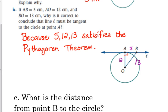What is the distance from point B to the circle? Using this figure right here that I've labeled 5, 12, and 13, what's the distance from point B to the circle? The closest distance.